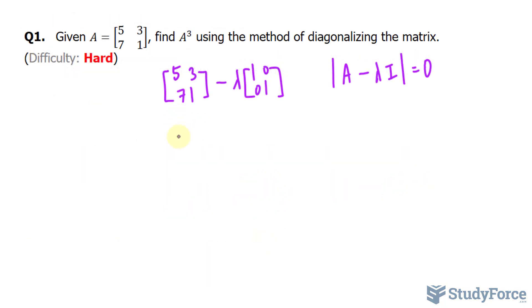We'll be subtracting this from lambda times the identity matrix, which is the diagonal matrix with the ones across. We'll end up with the following: 5 minus lambda, 3, 7, and 1 minus lambda. That's our brand new matrix. And according to the following formula, we need to find its determinant.